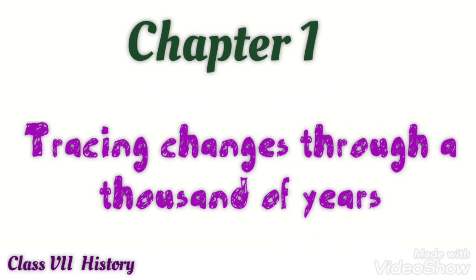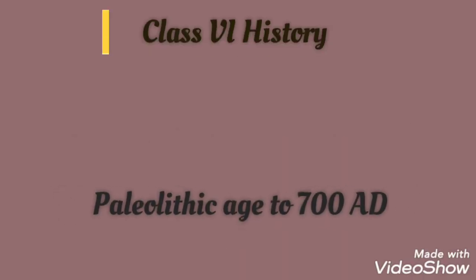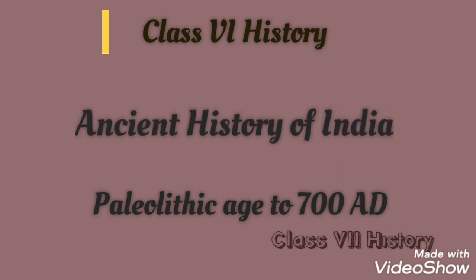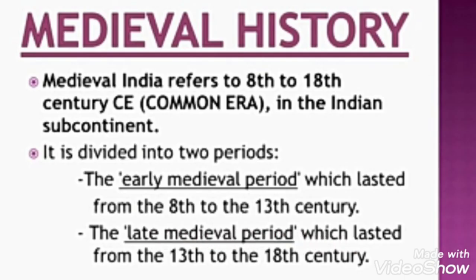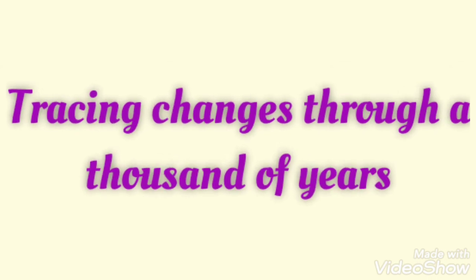Before we begin, let's have a look at what we learned in class 6 history. In class 6, we mainly focused on ancient history of India, which started from the Paleolithic age to around 700 AD. The whole volume for class 7 will focus on medieval history of India, which deals with the 8th to 18th century CE, or 700 to 1700 AD. As the name of the chapter suggests, we are going to talk about the variety of changes that took place in the thousand years of Indian medieval history.